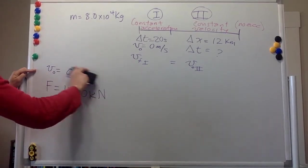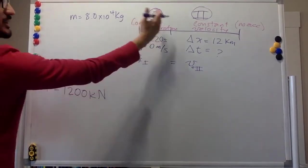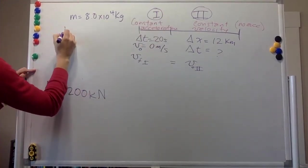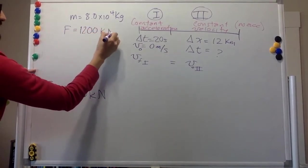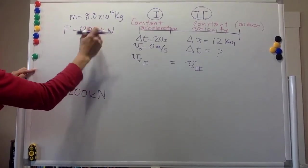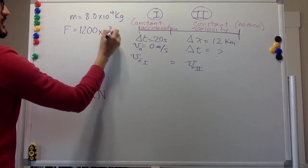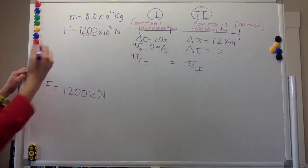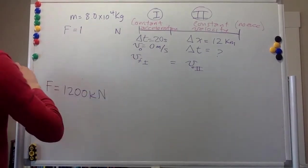And then the force only matters in the constant acceleration, right, when you have the thrusters on. So the force is 1200 kilonewtons. So kilo means times 10 to the 3 Newtons, and we have another 3, so I'm going to just say 1.2 times 10 to the 6.